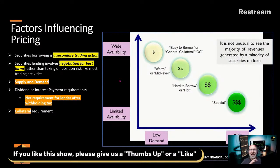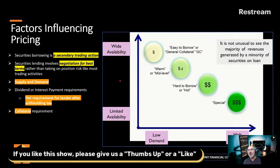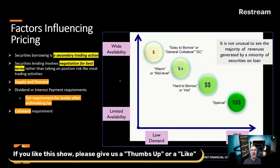I just realized I completely skipped a slide — so let's go back because this will be useful. This is a slide about the factors that influence pricing. We've talked about high value and low value, but what I haven't told you is what determines high value or low value. So securities lending is very much a secondary market trading activity — people don't just borrow securities for the fun of it. They always have to have some kind of driver, whether that's a trading side of things, whether it's operational efficiency, or whether it's regulatory driven. There's always something else happening, so securities lending is reactive in that sense.